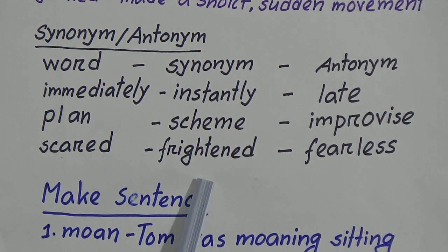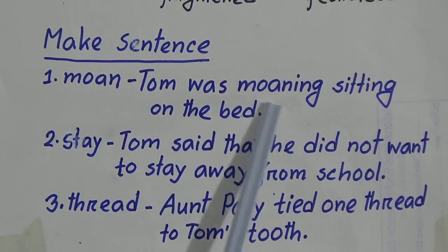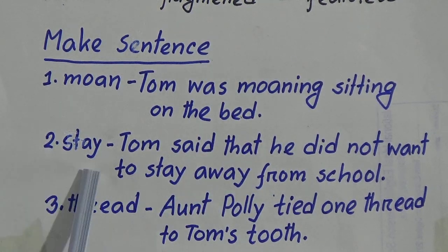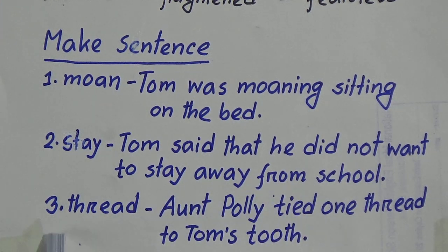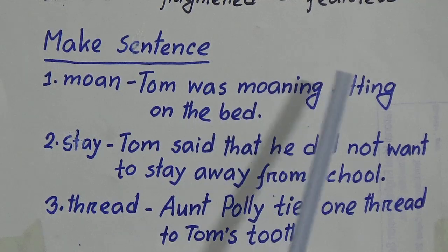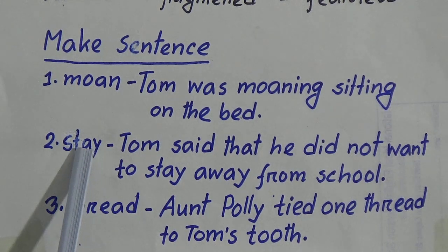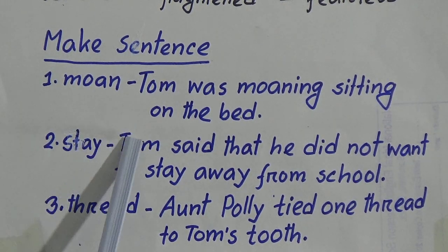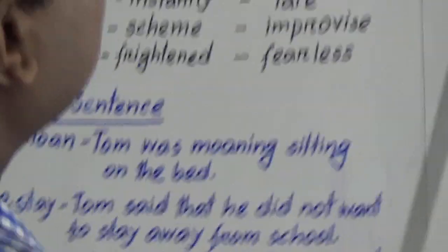'Scared': synonym is 'frightened,' antonym is 'fearless.' Now we will look at making sentences. Number one — 'moan': Tom was moaning sitting on the bed. Number two — 'stay': Tom said that he didn't want to stay away from school. Number three — 'thread': Aunt Polly tied one thread to Tom's tooth. Remember, you will not have to follow these sentences exactly — you can make your own sentences, but you have to maintain subject-verb agreement and understand the meaning.